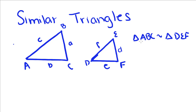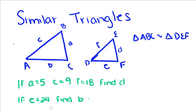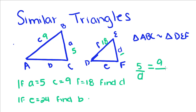So we know that triangle ABC is similar to triangle DEF. If we know that side A equals 5, C equals 9, and F equals 18, we want to find out what side D equals. So since they're similar, that means that their sides are proportional. So A, which is right here, 5, over D, which is what we're trying to find out, is equal to C over F because they're similar in proportional triangles.